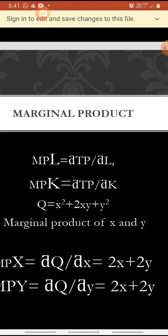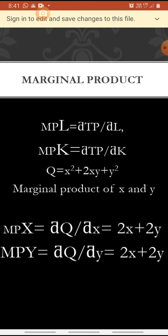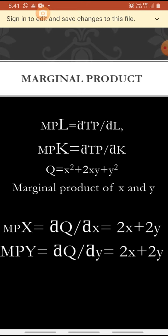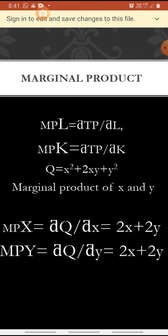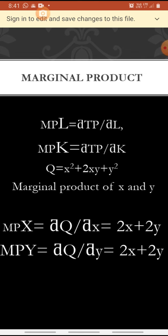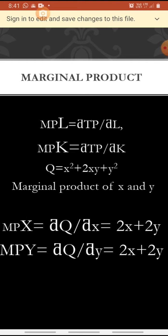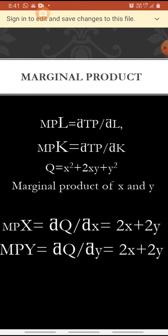Marginal product means marginal product of labor and marginal product of capital. How we find marginal product of labor and marginal product of capital from the total productivity function? Since there are two variables — labor and capital — we find the partial differentiation of that function. The equation for marginal productivity of labor is dou TP by dou L, and for marginal productivity of capital it is dou TP by dou K.